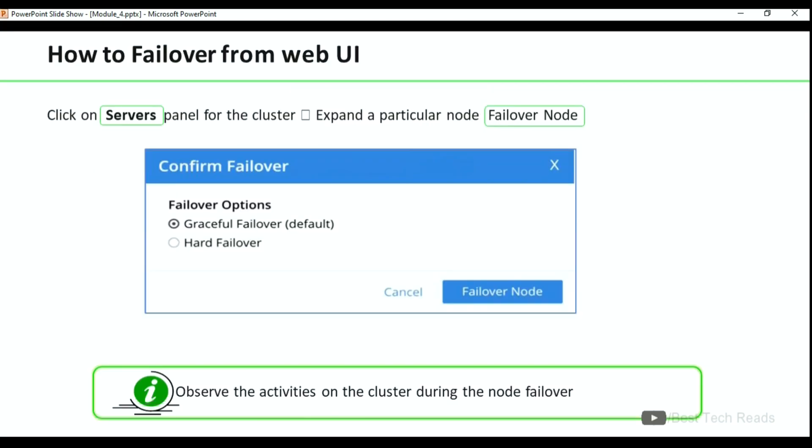This slide is about how to failover from web UI. You can go to Servers tab and click on that particular server which you are going to failover. Click on failover. You will be prompted with two options: graceful failover, which is the default one, and hard failover.